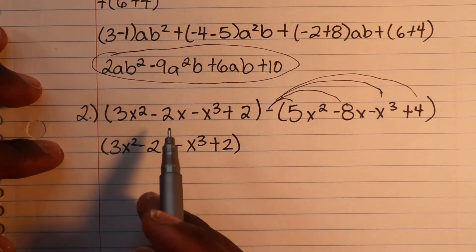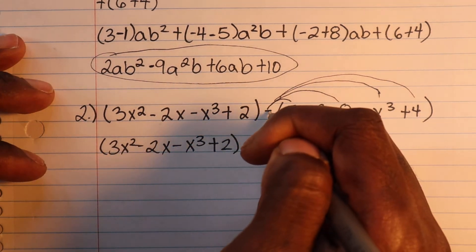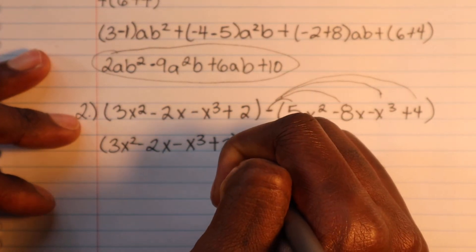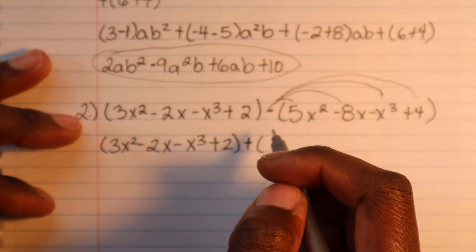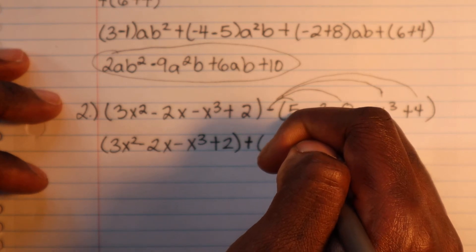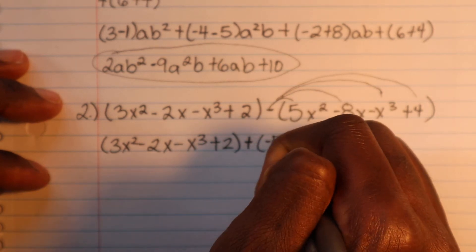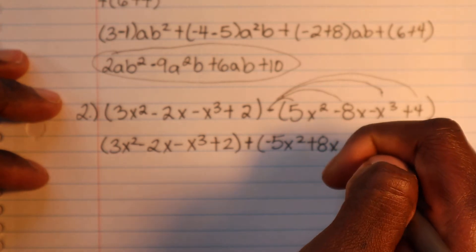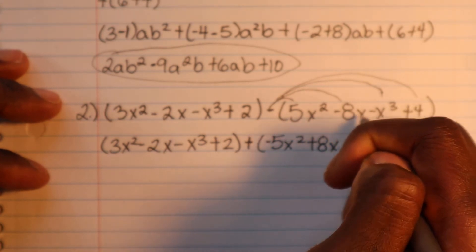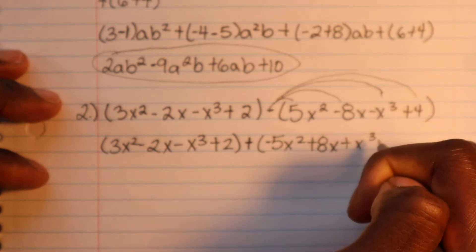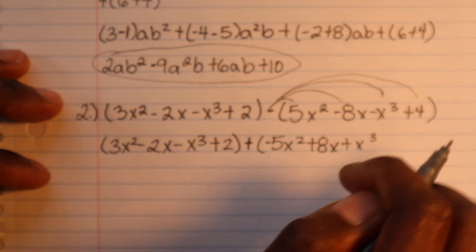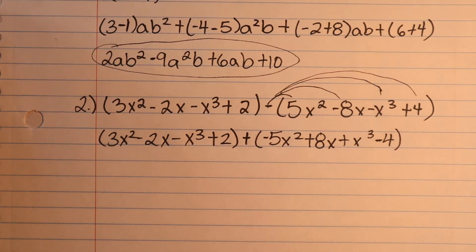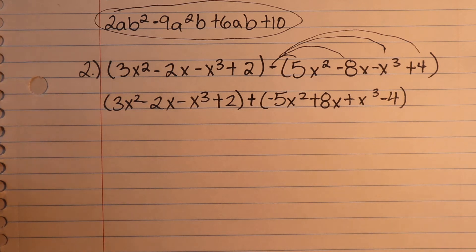So now think about this: what's written inside the first parentheses stays the same because we never touch it. But since we have this negative sign and distribute it to everything in the second parentheses, the negative on the 5x² — negative times a negative gives you a positive. And the negative 1 on the x³ becomes positive. Then the positive 4 becomes negative 4.